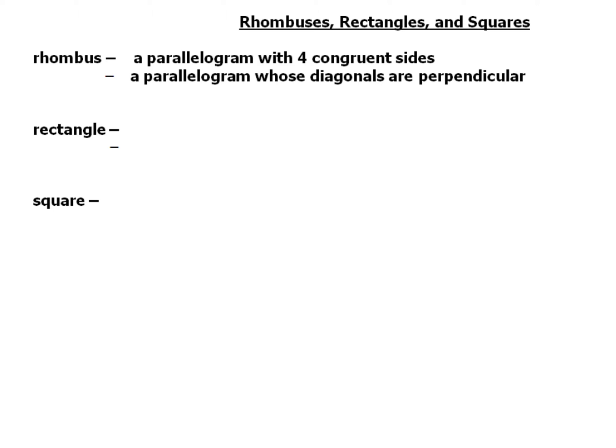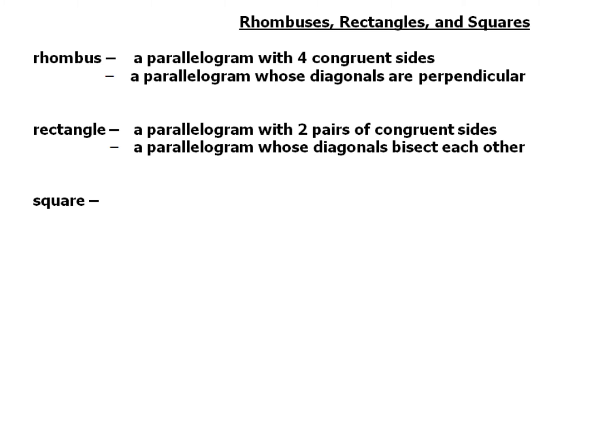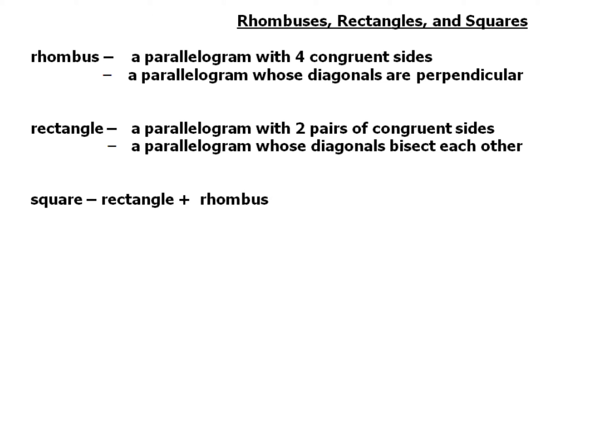The diagonals of a rhombus are perpendicular. A rectangle is a parallelogram with two pairs of congruent sides whose diagonals bisect each other. Lastly, the most special shape is the square, which has all the characteristics of both the rectangle and the rhombus.